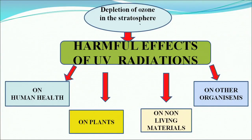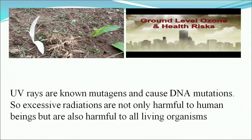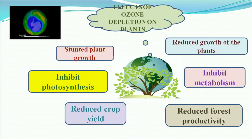Harmful effects of UV radiation: they affect human health, plant life, non-living materials, and other organisms. UV rays are known mutagens and cause DNA mutations, so excessive radiation is harmful not only to human beings but to all living organisms. Effects on plant life include reduced growth of plants, inhibition of metabolic reactions, reduced forest productivity, reduced crop yield, and inhibition of photosynthesis resulting in stunted plant growth.